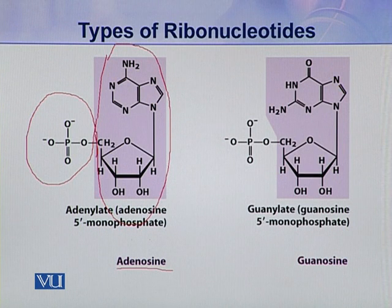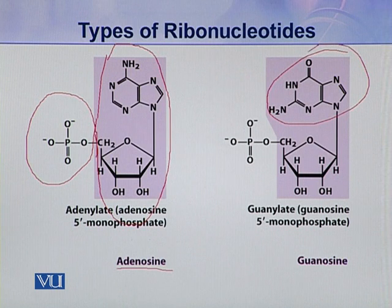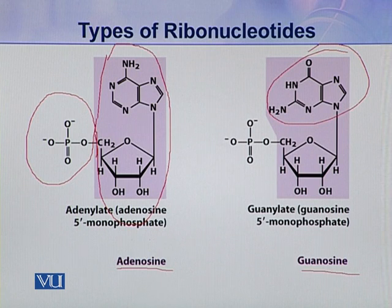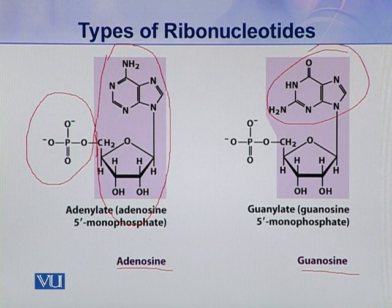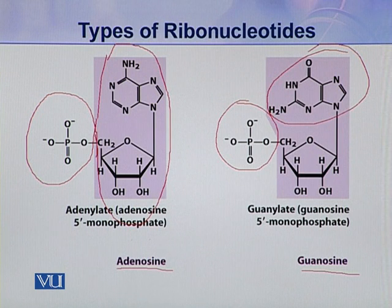Let's move to the second type of ribonucleotide present in the nucleic acid. Here it is guanine. So in this coloured portion, guanine joins with a pentose sugar and they make a guanosine. And when to this guanosine a phosphoric acid is attached, it makes a guanylate.